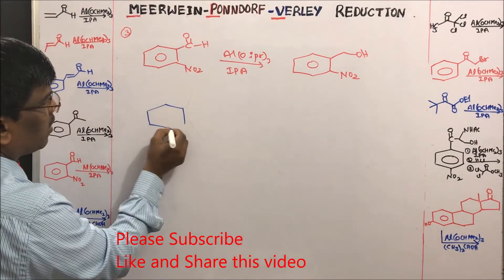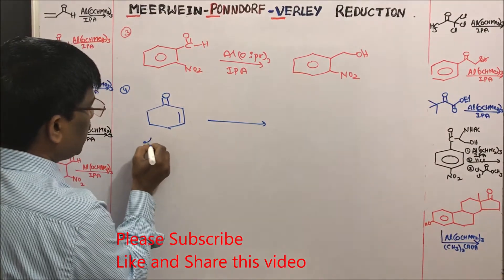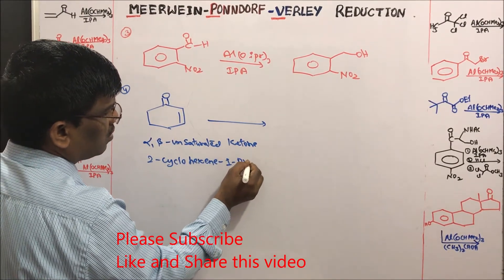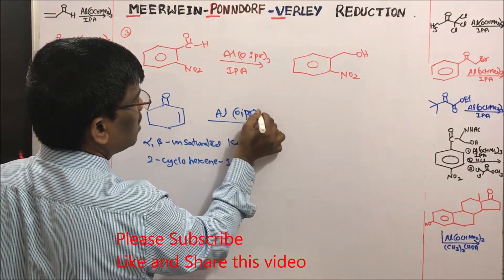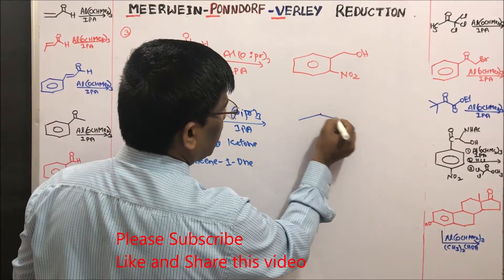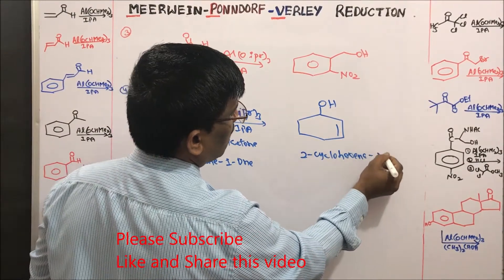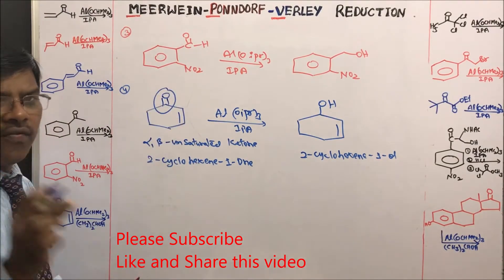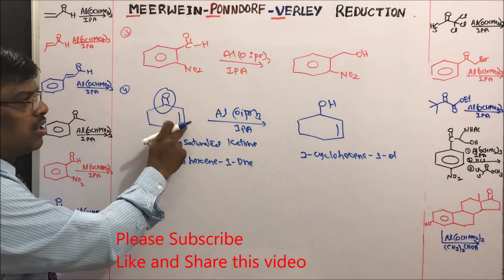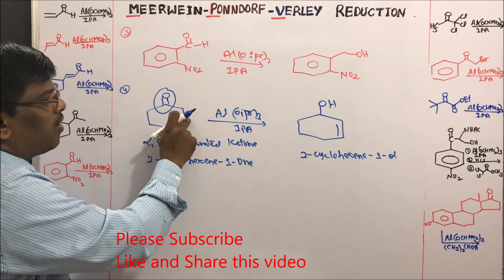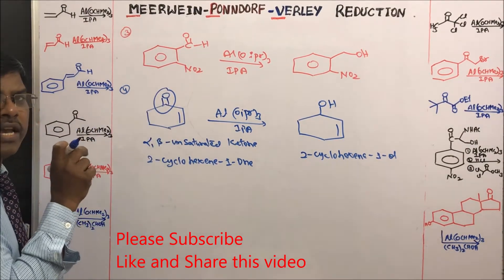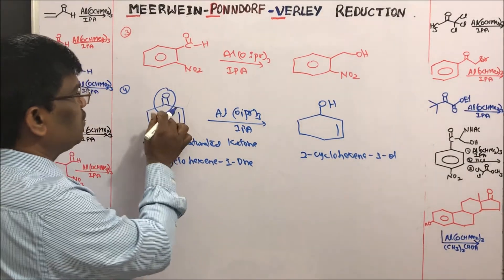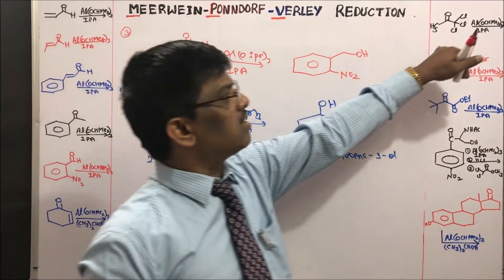An important example: 2-cyclohexenone, an alicyclic alpha-beta unsaturated ketone, when reduced using aluminum isopropoxide in isopropyl alcohol gives exclusively 2-cyclohexen-1-ol — an alpha-beta unsaturated alcohol similar to allyl alcohol. If LAH is used, the double bond would also be reduced. If sodium borohydride is used, it reduces the double bond first and then the ketone, giving a mixture of products.